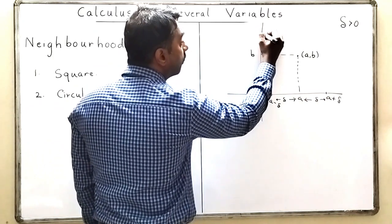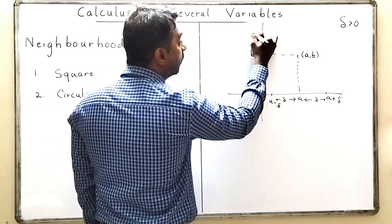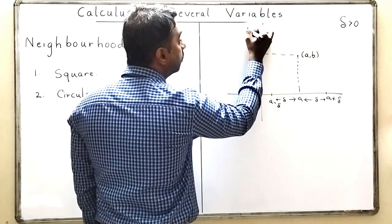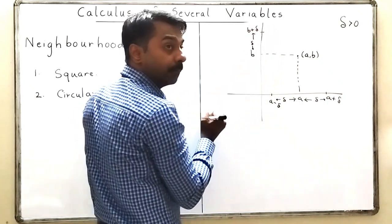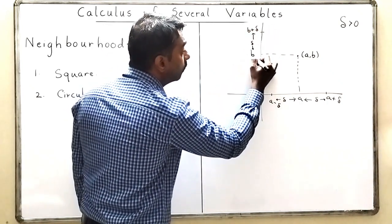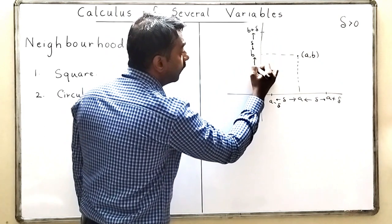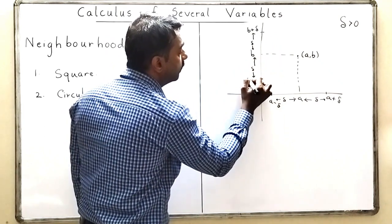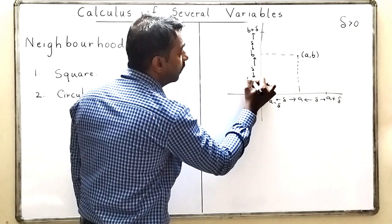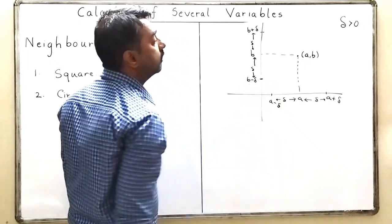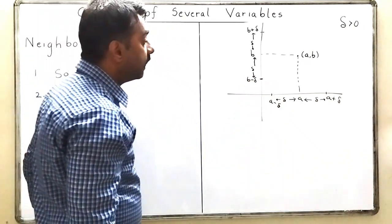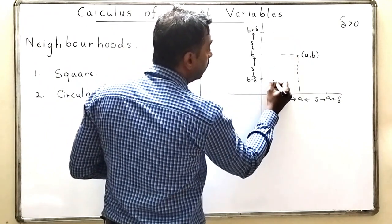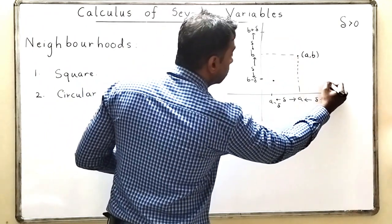I will do the same thing for b also. If I go upside by delta units, the point I get will be b plus delta, and if I go below by delta units, that will become b minus delta. Then I will look at the square formed by these points.